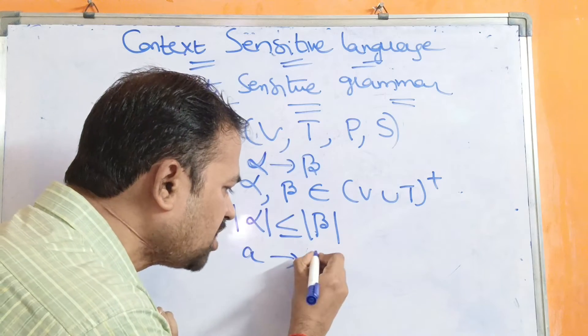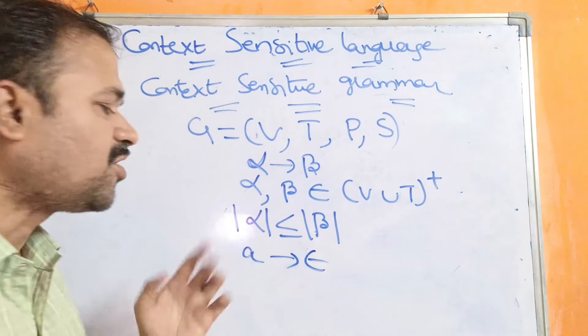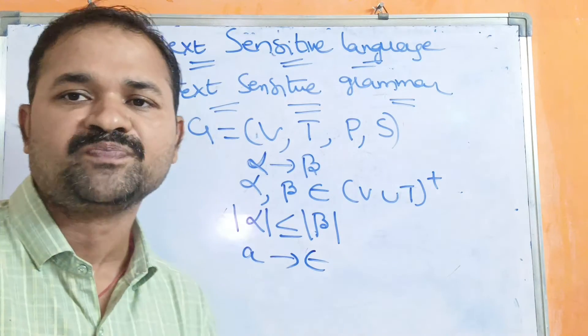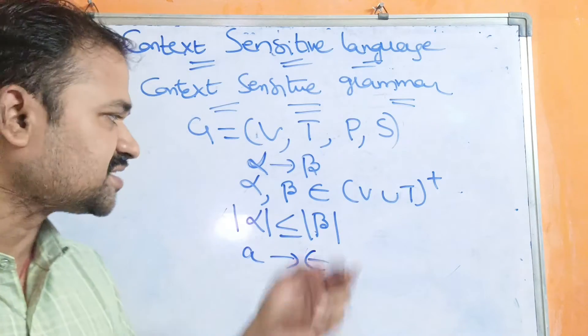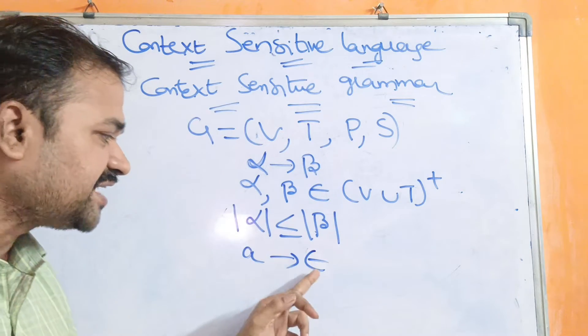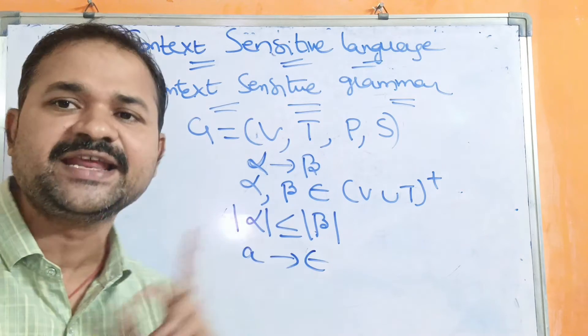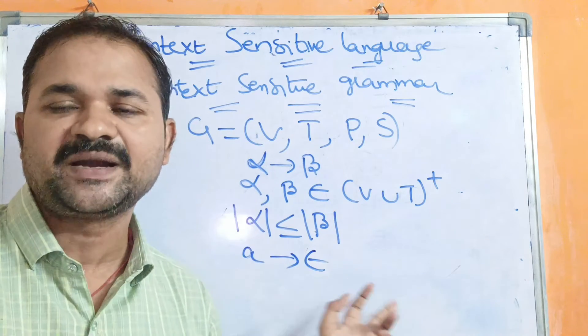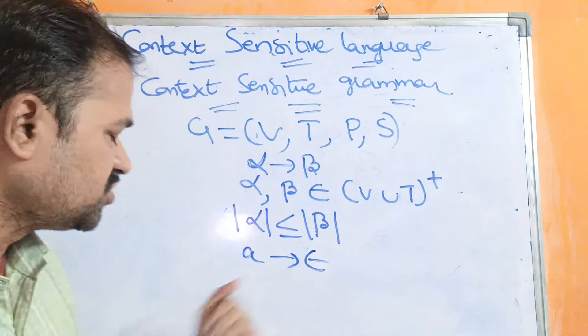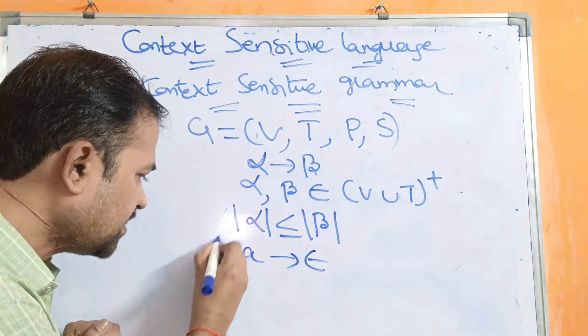Next, 'A implies epsilon'. Is it a context sensitive grammar? No. Because right hand side should not contain epsilon. So this is not a context sensitive grammar.